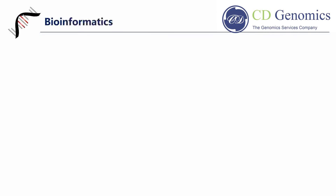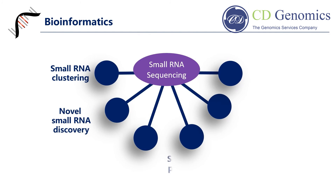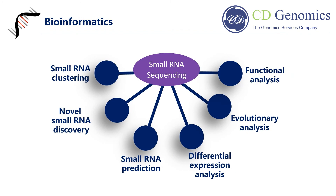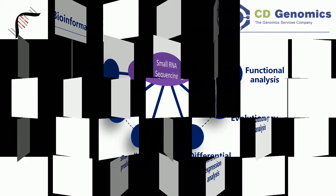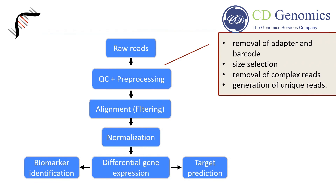Small RNA sequencing can be used for small RNA clustering, novel small RNA discovery, target prediction, differential expression analysis, evolutionary analysis, and functional analysis. Prior to these, raw sequencing data need to be pre-processed and normalized. The data pre-processing involves removal of adapter and barcode, size selection, removal of complex reads, and the generation of unique reads.